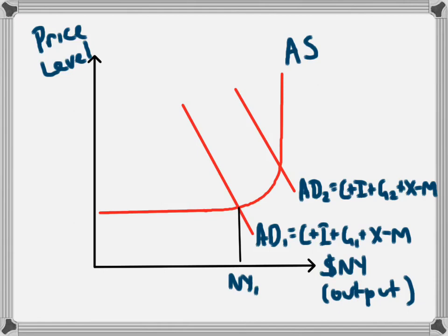This will lead to a shift out of the aggregate demand curve from AD1 to AD2. This just moves outwards in the same way that there would be an increase in a normal demand curve. This new level of aggregate demand leads to a new level of national income, which is NY2.